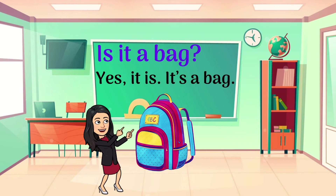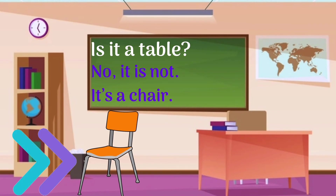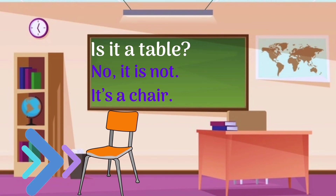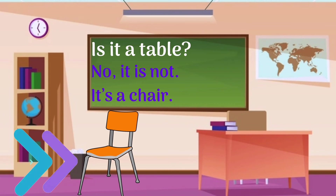Now Miss Leah wants to show you the next example. The example is: 'Is it a table?' Let's pay attention to the picture here. We can answer by saying 'No, it is not. It's a chair,' because the picture here is a chair, not a table.